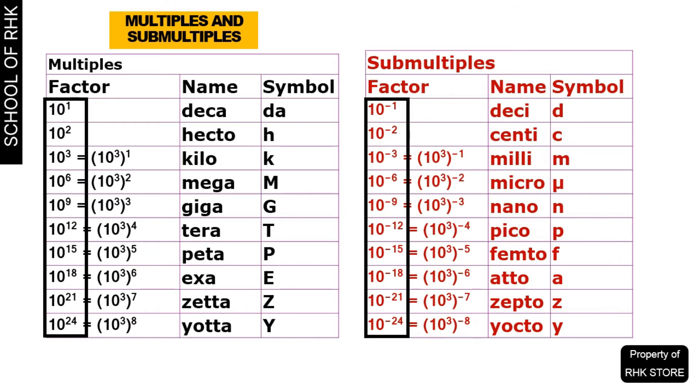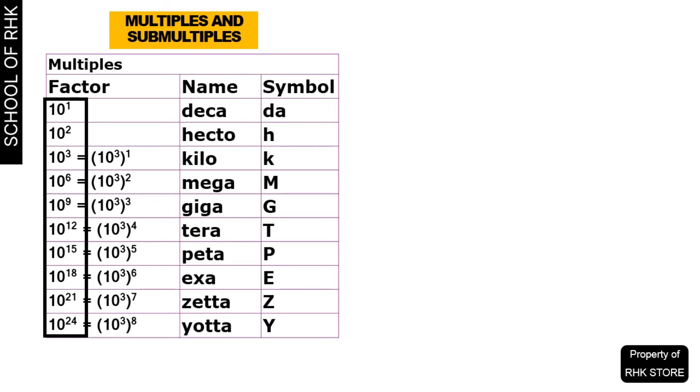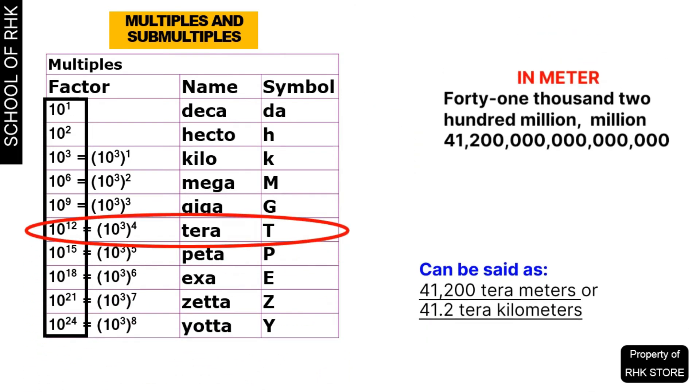Now we can say the distance between the sun and the Alpha Centauri A and B is 41,200 tera meters or 41.2 tera kilometers.